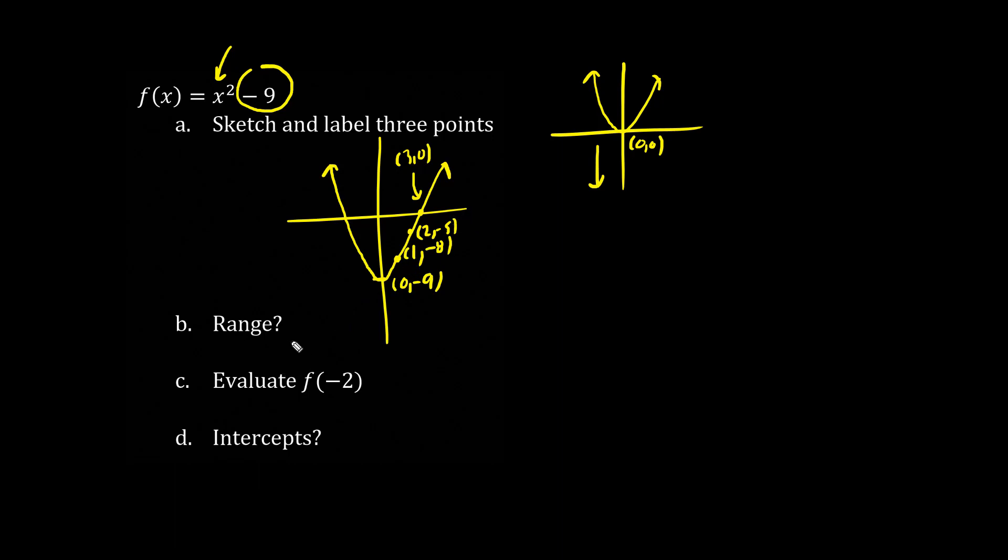So the range here is y is greater than equals to negative 9, or, square bracket, negative 9 is the lowest number, comma, infinity is the highest possible y value.